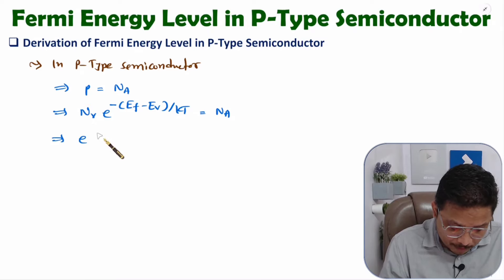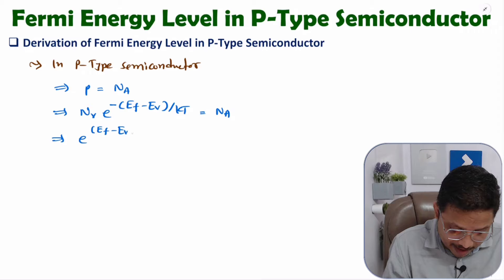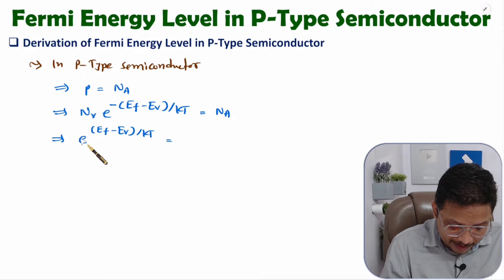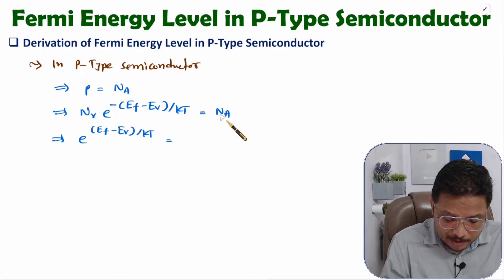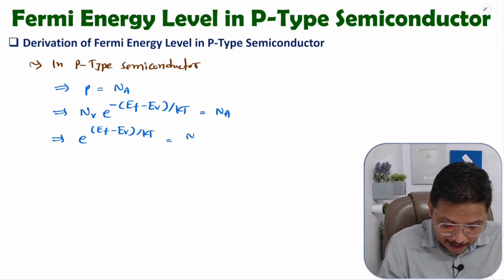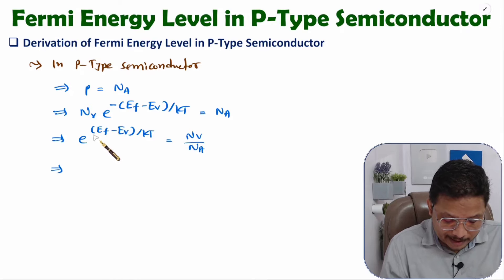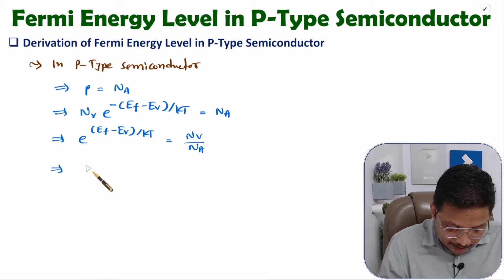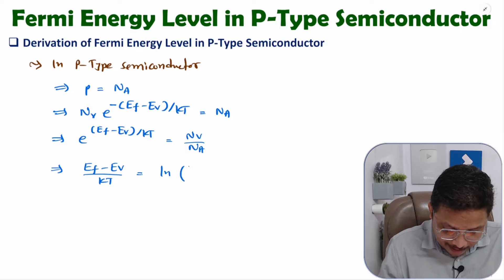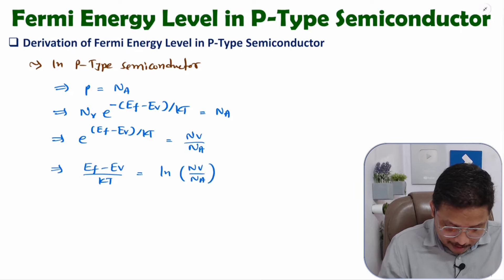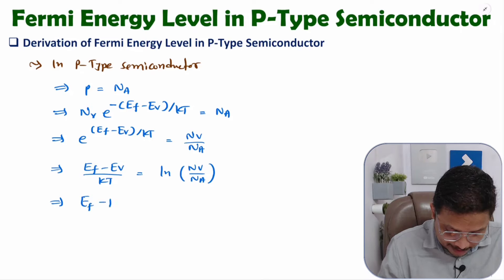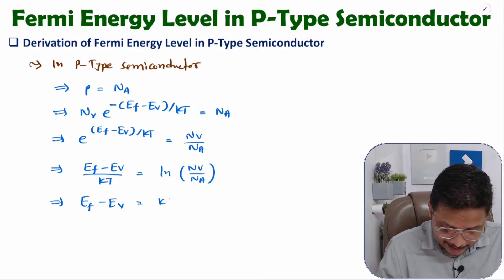Let us simplify this. We can write E to the power (Ef minus Ev) divided by KT. Moving Nv to the other side gives Na by Nv, and converting from minus to plus gives Nv by Na. Taking the natural log on both sides, we have (Ef minus Ev) divided by KT equals ln(Nv/Na). Therefore, Ef minus Ev equals KT into ln(Nv/Na).